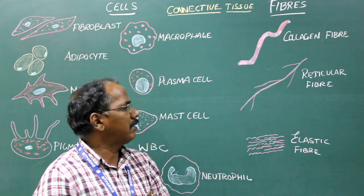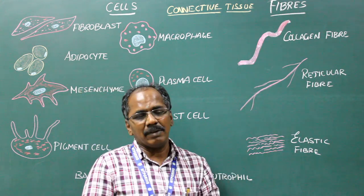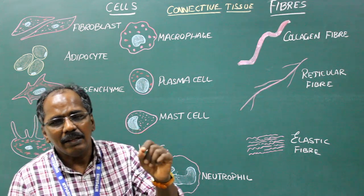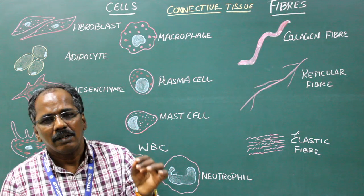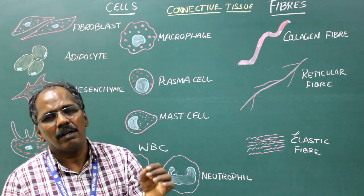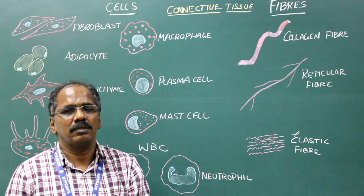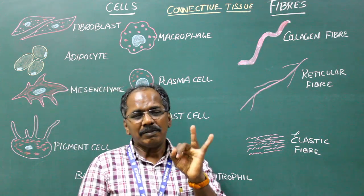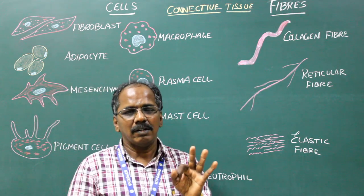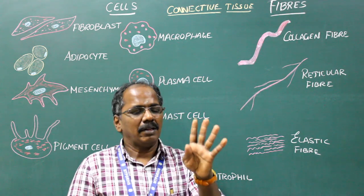Reticular fibers: They are highly branched delicate fibers that give support to the organs. Examples: spleen, lymph node, liver, thymus, kidney, bone marrow.